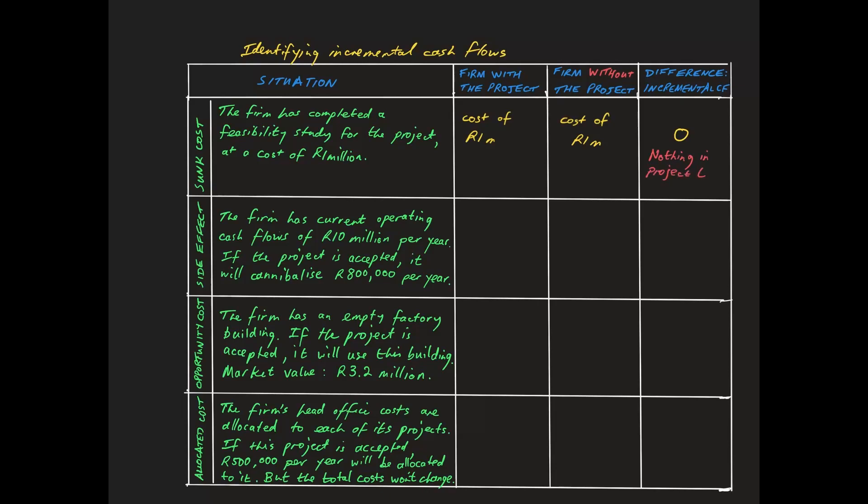To emphasize the point, if the firm decides to reject the project, it can't then call up the engineers and say, we're not going ahead, so please can we have our money back. So, because the one million rand appears in both columns, the difference is zero and there is nothing in the project timeline.